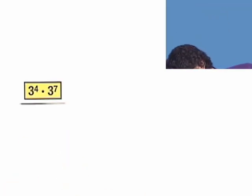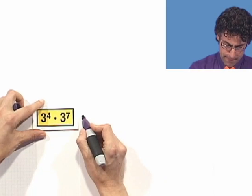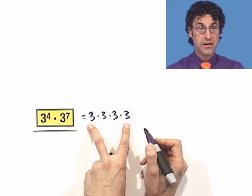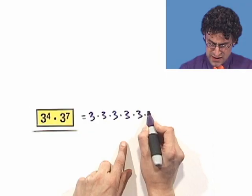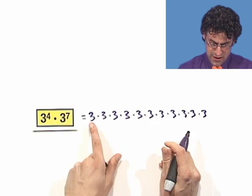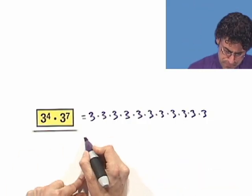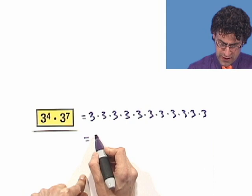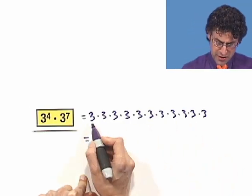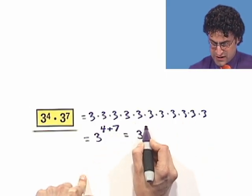What does this mean? Well, if we write all this out, we see this is equal to 3 times 3 times 3 times 3 — that's 3 to the 4th — times 3 times 3 times 3 times 3 times 3 times 3 times 3, which is 3 to the 7th. How many factors of 3 do we have? Counting them up, we get 11. That's 4 from the first term plus 7 from the second, giving us 3 to the 11th.